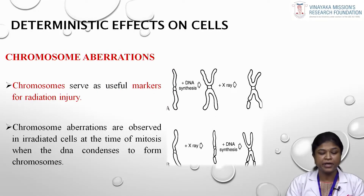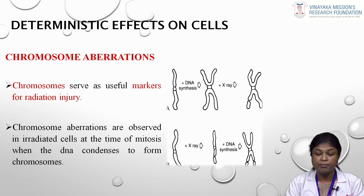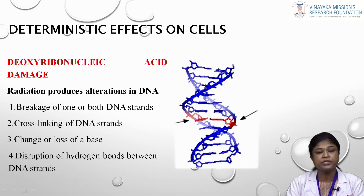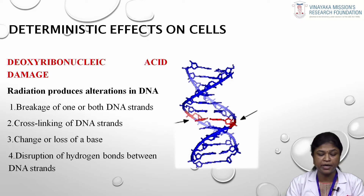Chromosomes serve as very useful markers in identifying radiation injury. Chromosomal aberrations are observed in irradiated cells at the time of mitosis when DNA condenses to form chromosomes. When a person is irradiated before DNA synthesis, only one arm of the chromosome is affected; if irradiated after DNA synthesis, both arms are affected. Radiation can cause alterations in DNA including breakage of one or both strands, cross-linking of DNA strands, change or loss of a base, and disruption of hydrogen bonds between DNA strands.